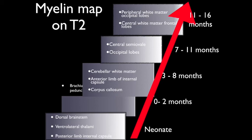As the child gets older, there is progression of myelination to the cerebellar white matter, the anterior limb of the internal capsule, and the corpus callosum, which myelinates posterior to anterior. Further on, the central semi-ovale and the occipital lobes myelinate in the next few months. And over the next few months to the second year of life, the peripheral white matter in the occipital lobes and the central white matter in the frontal lobes also myelinate. This is the progression of myelination on T2-weighted images.